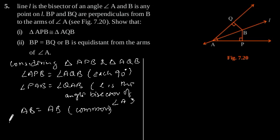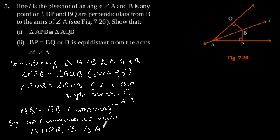Therefore, by AAS congruence rule, we can say that triangle APB is congruent to triangle AQB, and by CPCT, we can say that BP is equal to BQ.